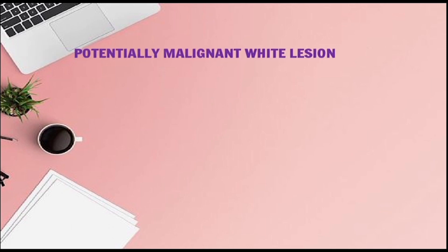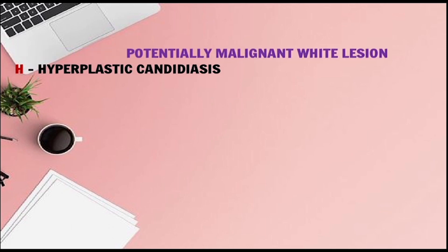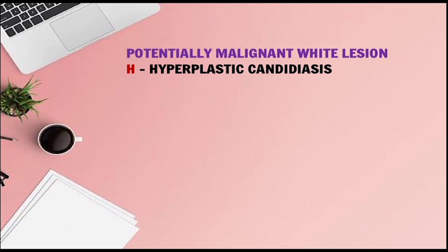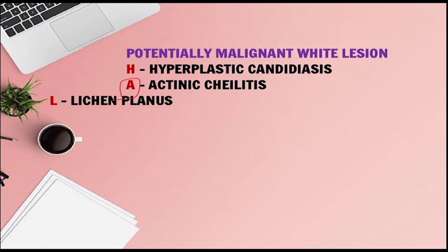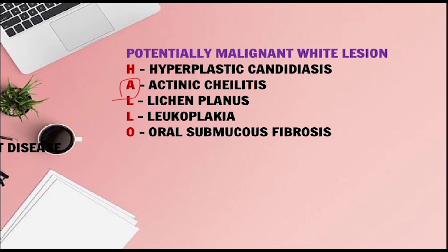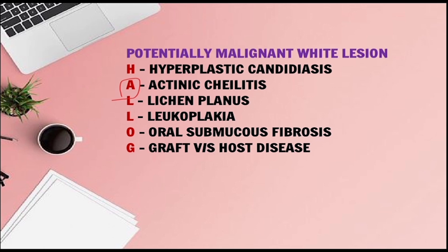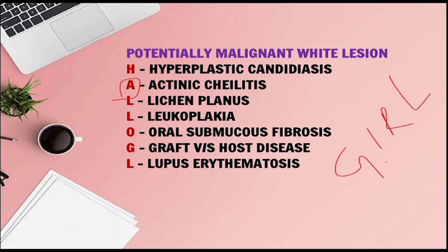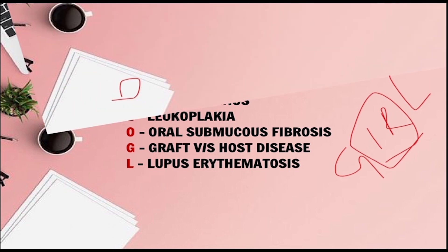To say hello to the girl — here we are talking about potentially malignant white lesions. H for Hyperplastic Candidiasis, A for Actinic Cheilitis, L for Lichen Planus, L for Leukoplakia, O for Oral Submucous Fibrosis, G for Graft Versus Host Disease, and L (from 'girl,' with I and R silent) for Lupus Erythematosus.